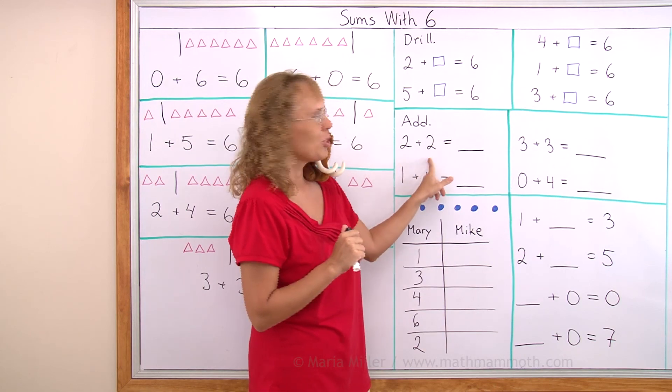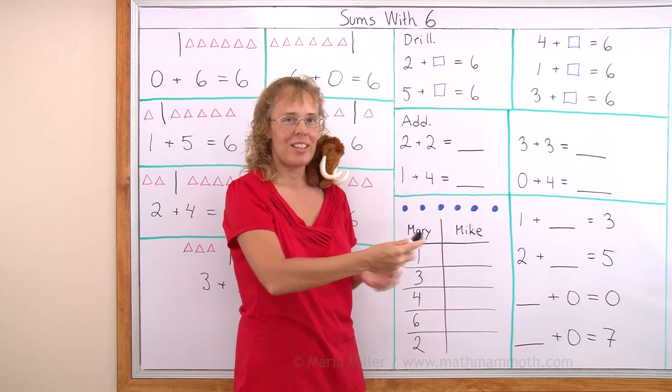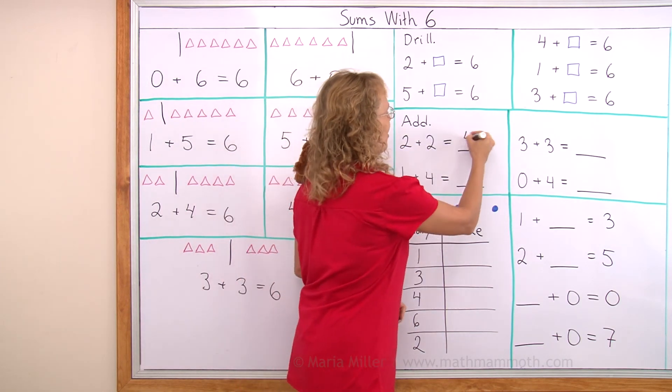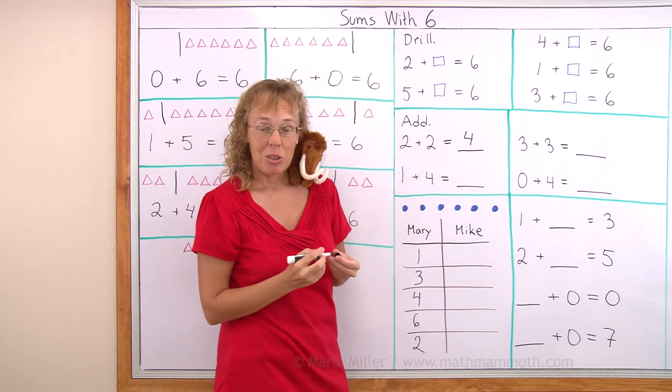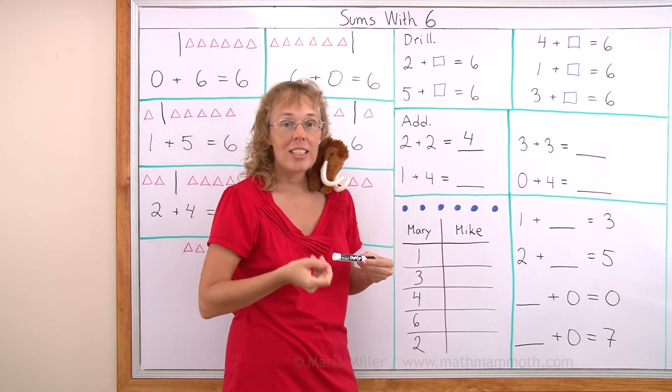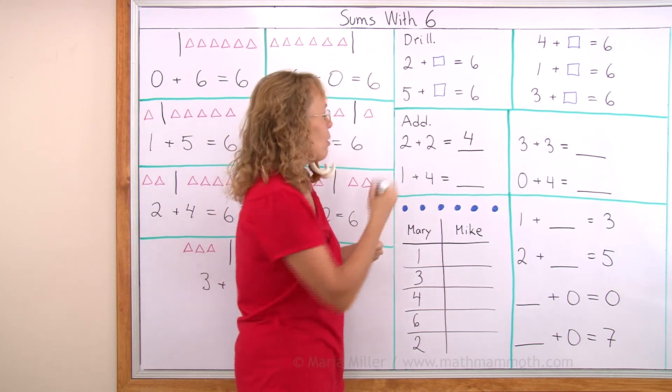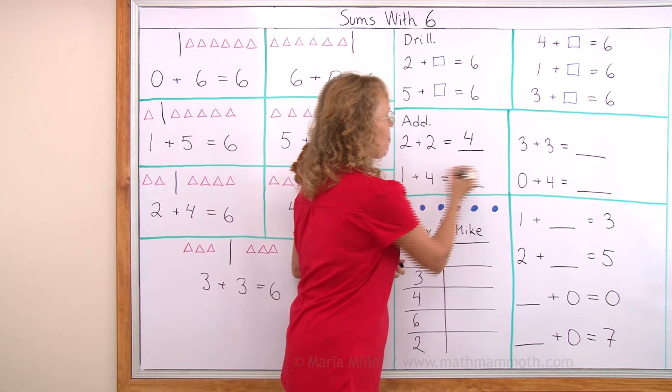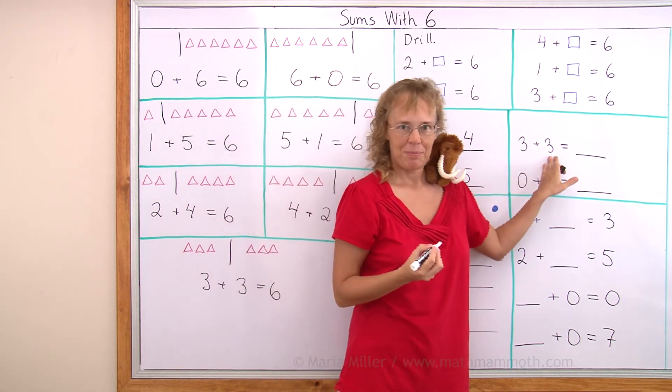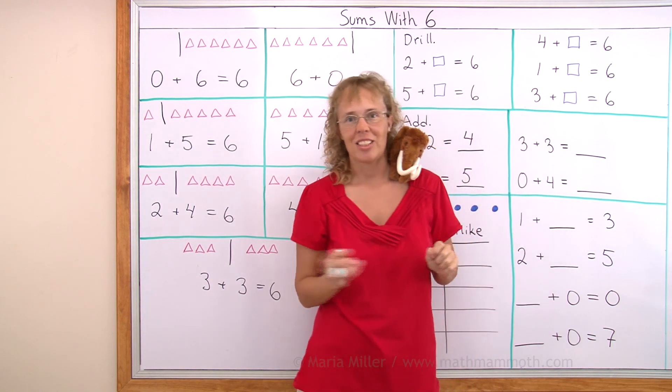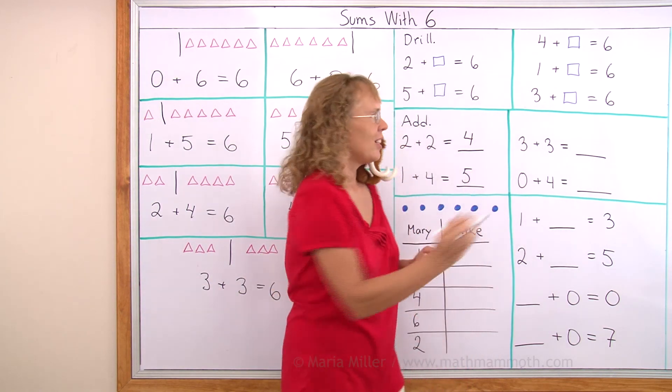Two plus two. Two and two together is four. How about one plus four? Do you remember that from our previous lesson? Sums with five. One and four makes five. Three and three. Well, that's in this lesson sums with six. It was over here. So we have six.